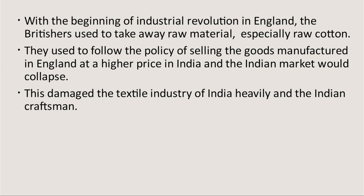With the beginning of the industrial revolution in England, the British used to take away raw material, especially raw cotton. This is why Europeans came to India — in search of huge amounts of raw materials as part of the industrial revolution. They came to our country for raw material, especially raw cotton. They followed the policy of selling goods manufactured in England at higher prices in India, so that the Indian market would collapse. They took raw materials from our country at cheaper prices, took them to Europe, made finished products, and brought them back to India to sell at high prices.